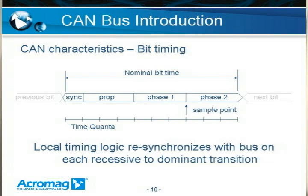Each CAN node has its own local oscillator. There is no clock information embedded in the CAN signal, so at the beginning of each bit time that has a recessive-to-dominant transition, all receivers must synchronize to the transmitter. Each local oscillator runs at a multiple of the bit rate and has internal counters to determine the optimum time to sample the CAN bus signal during the bit period, tuned by the system engineer to optimize receiver timing.